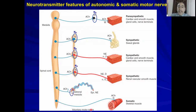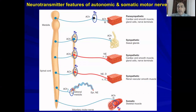Finally, the somatic neuron — there is no ganglia in the somatic neuron. The nerve travels all the way from the CNS to the affected organ, which is the skeletal muscle. The receptor here is NM — N for nicotinic, and M for muscle type.